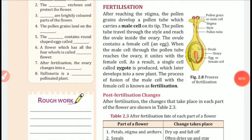In this part we will study about the process of fertilization in plants. After reaching the stigma, the pollen grains develop a pollen tube which carries a male cell on its tip.